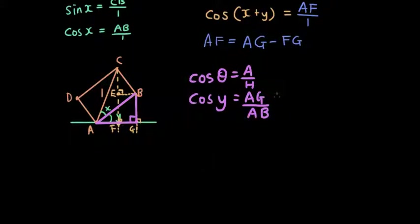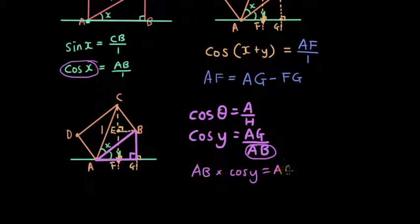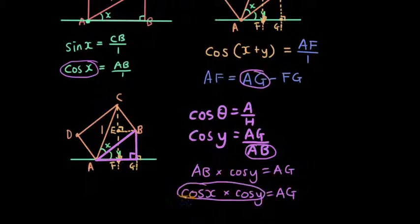And if you see from the previous definition, AB is equal to cos x. AB divided by 1, so that's just AB equals cos x. So I can move the AB to the left, so AB times cos y equals AG. And AB equals cos x, so I have cos x times cos y equals AG. And then I can replace AG with this expression here, so we've nearly proved it.